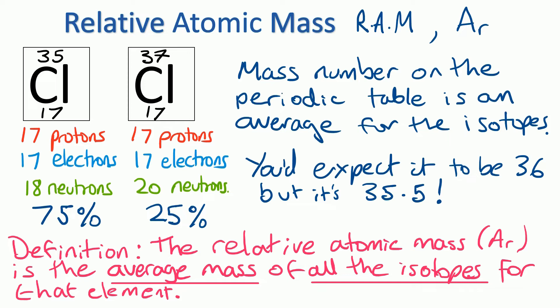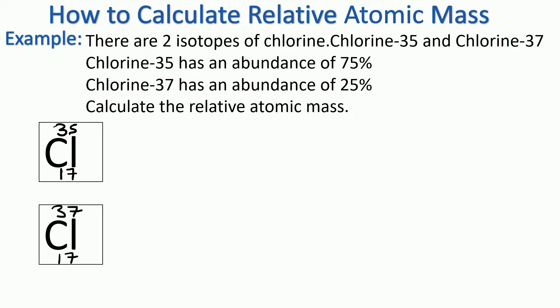Sticking with the previous example of chlorine, if we were asked how to calculate the relative atomic mass, you'd be given certain information in an exam question. It would tell you that there are two isotopes of chlorine, chlorine-35 and chlorine-37, they're the mass numbers of the two different isotopes.